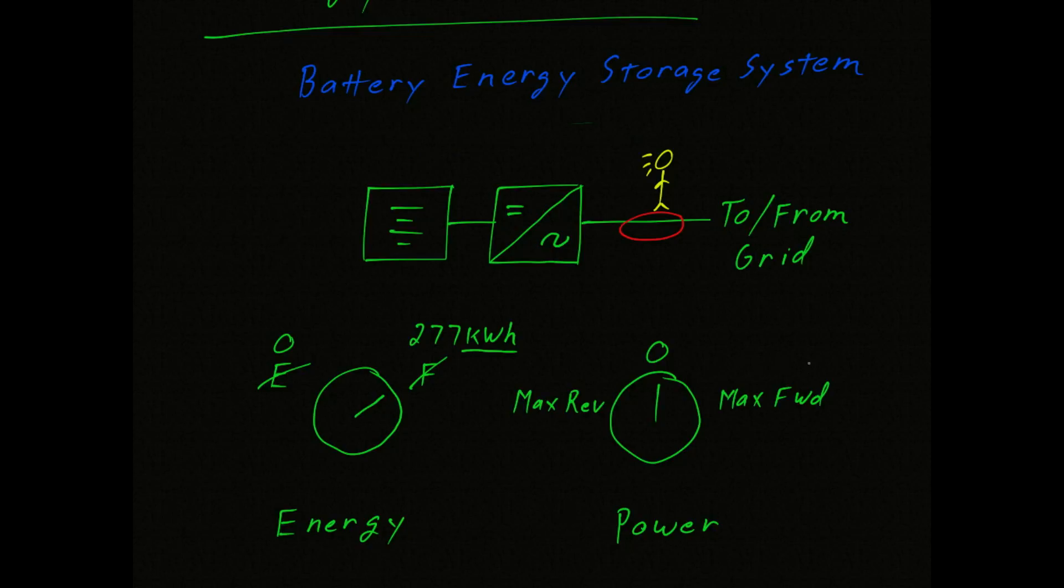Now earlier, we'd find the maximum forward power of our BESS to be eight megawatts. And for a variety of reasons, the maximum recharge rate, which is to say the maximum reverse, will likely be less. So let's assign a value such as 200 kW. Once again, notice the units. For energy, we had kilowatt hours. And now for power, we've got megawatts.